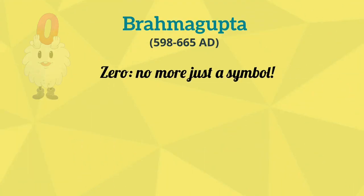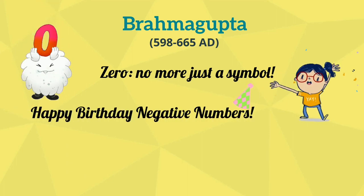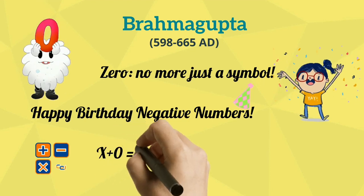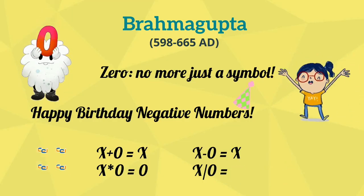He gave zero its own identity and then split it into two equal but opposite components, giving birth to negative numbers. He then invented the rules for calculation with zero, though he went a little wrong with division.